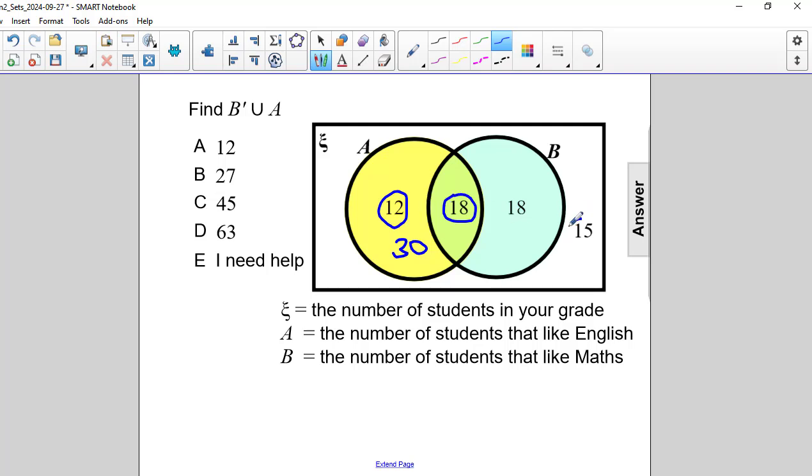We also have 15 students out here that like neither English nor math. Now set B, there are 18 students who like math. So the complement of set B would eliminate this 18 because there's 18 students who like math only. We're going to eliminate that.